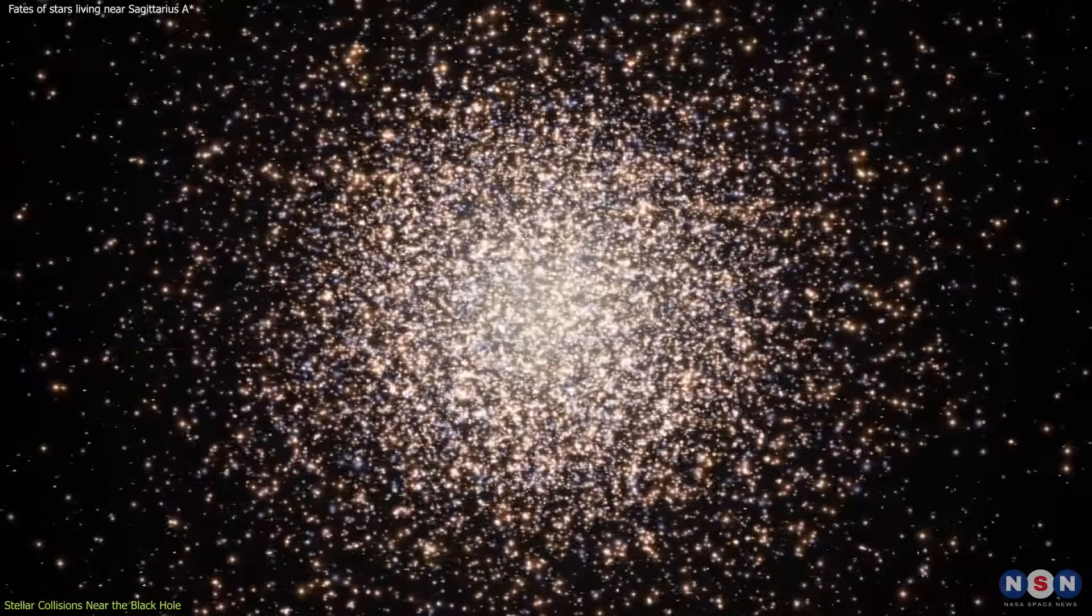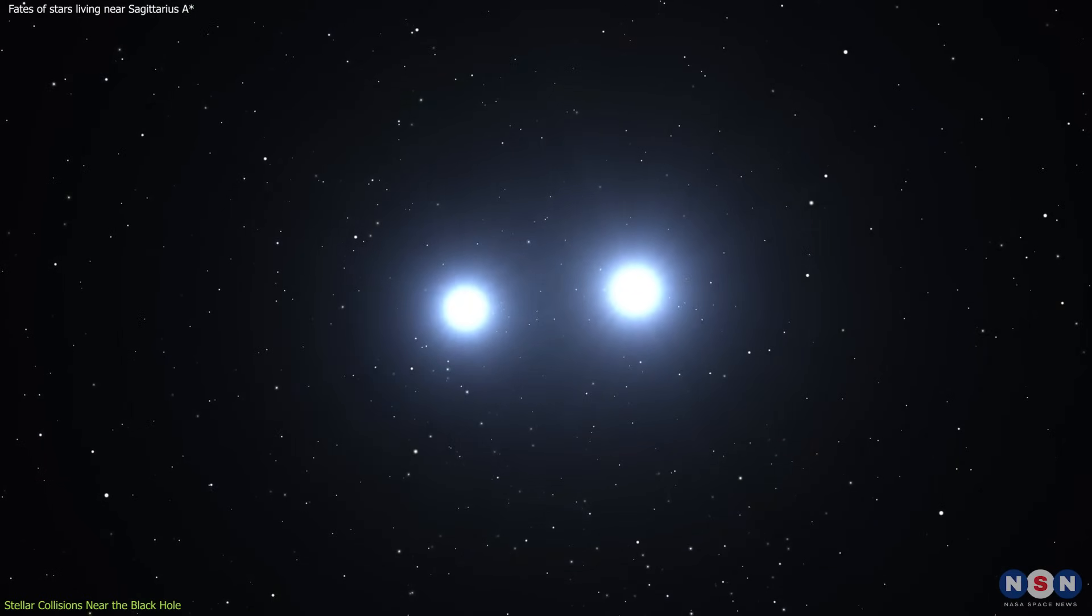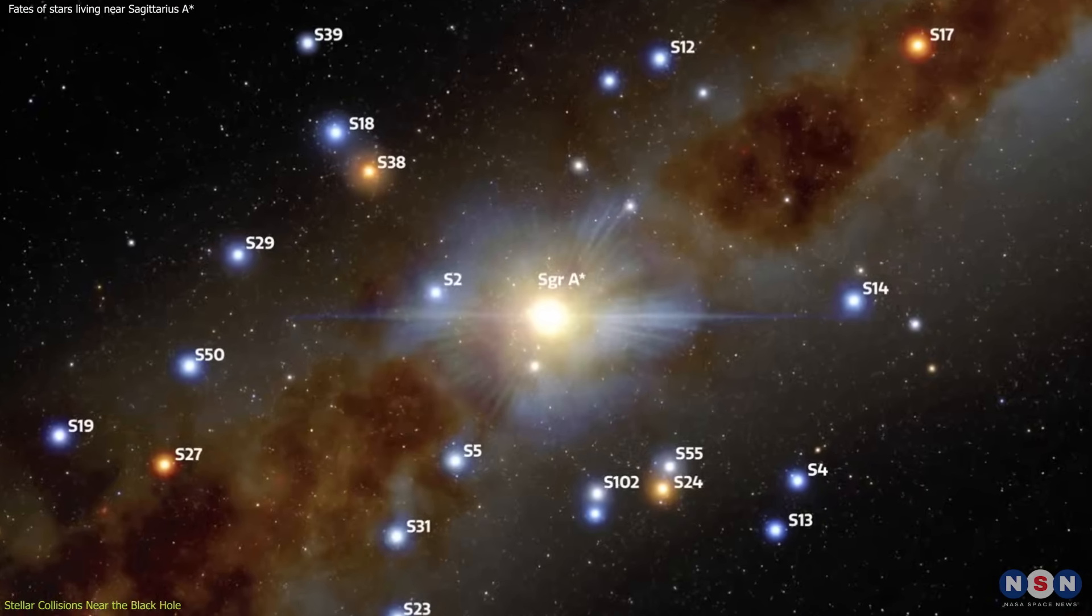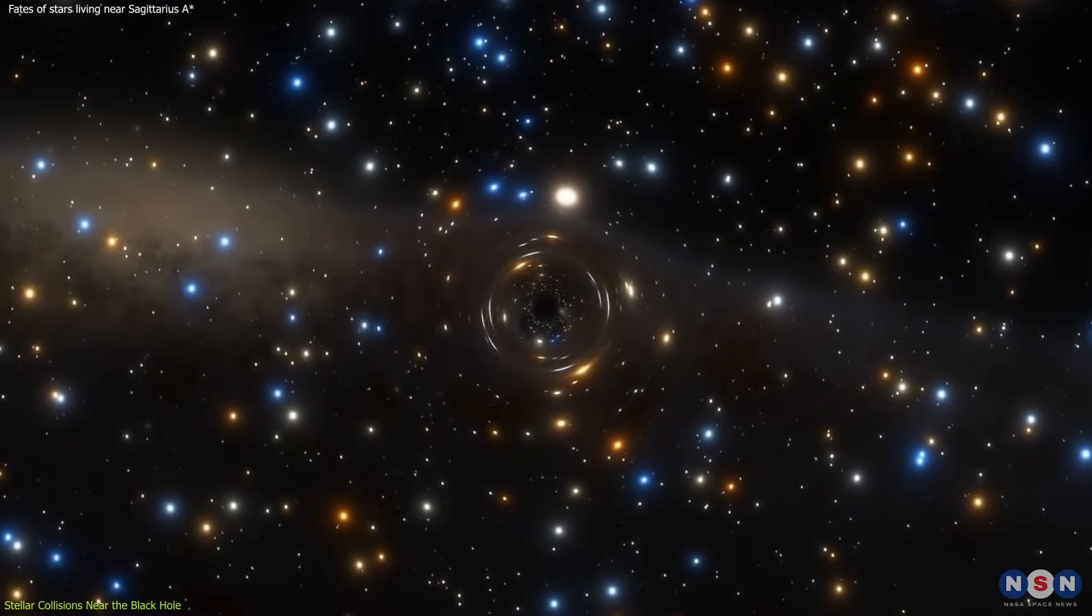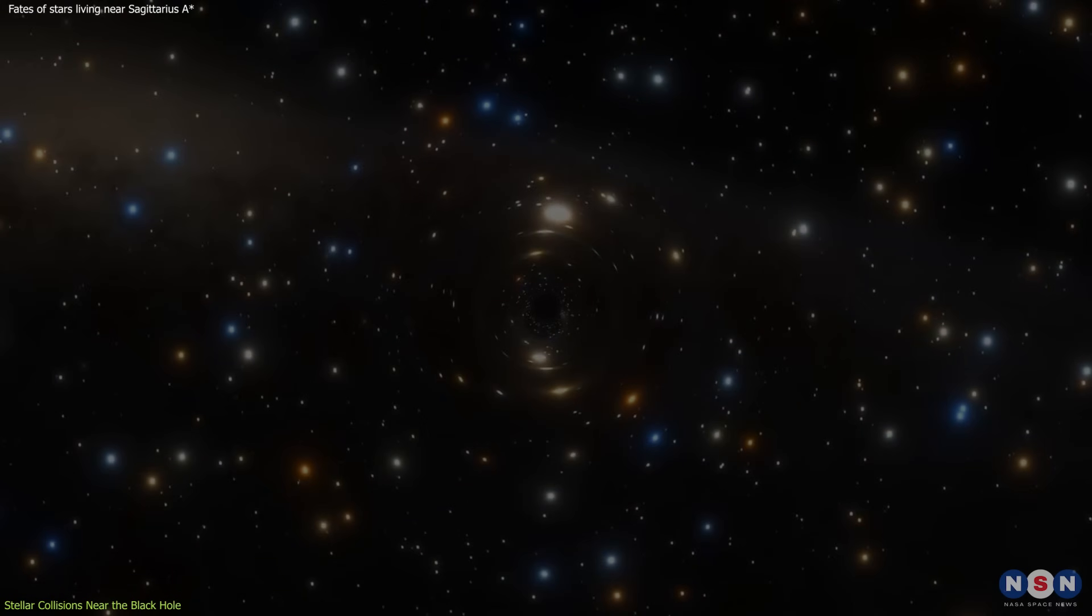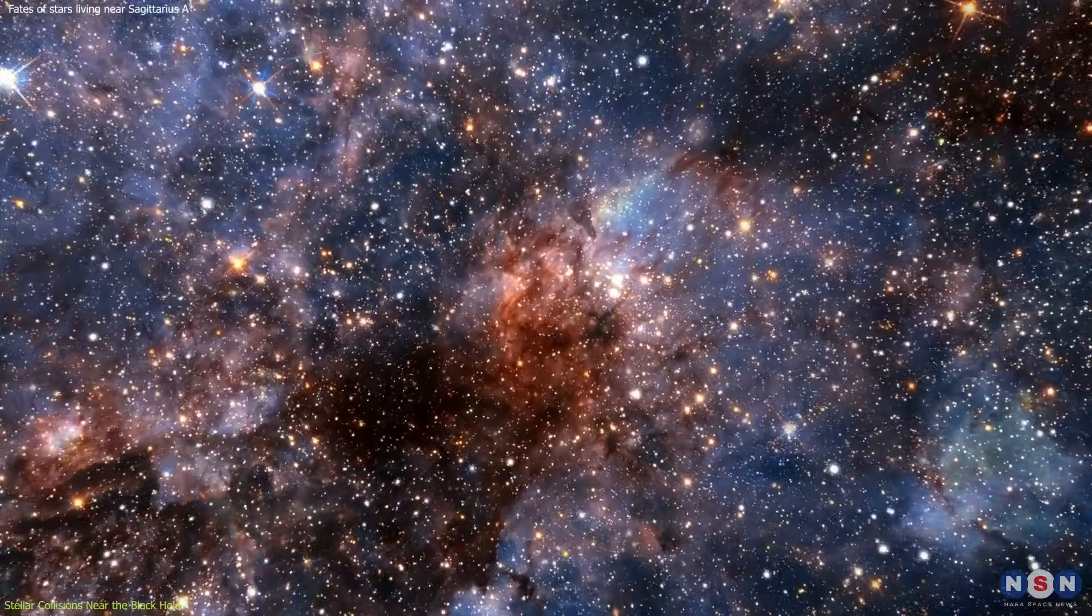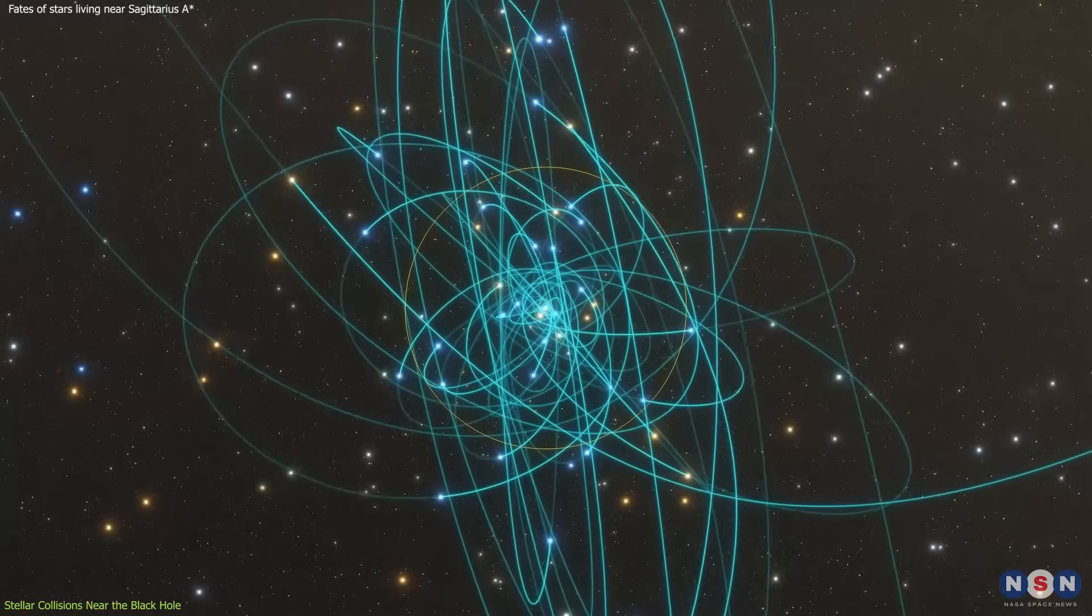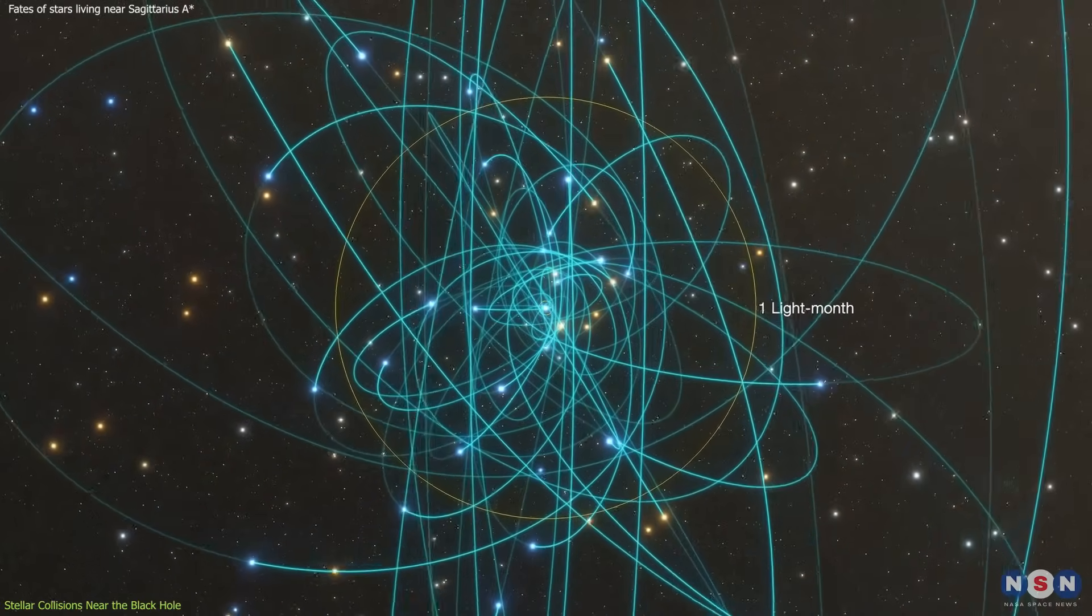As a result, the area becomes a hotbed for stellar encounters, ranging from near misses to full-on collisions. The density of stars near Sagittarius A-star is staggering. Within a mere 0.1 parsecs of the black hole, the star count can exceed a million. This is akin to cramming all the stars normally found in a space spanning four light-years into an area smaller than our solar system. The sheer number of stars, coupled with their high velocities, makes collisions almost inevitable.